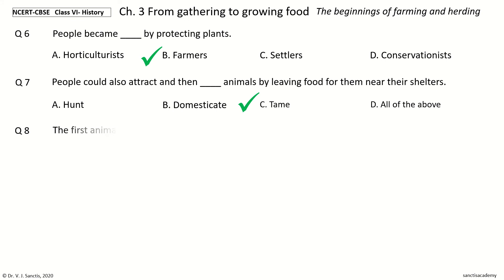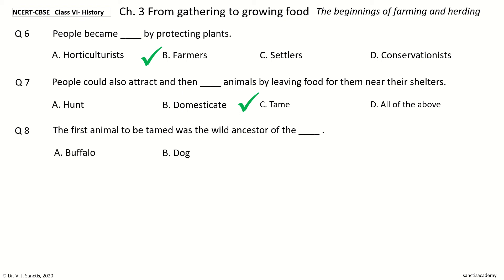Question 8. The first animal to be tamed was the wild ancestor of what. The options are: buffalo; dog; sheep; goat. And the answer is dog.